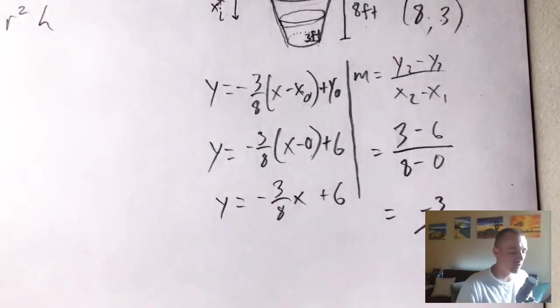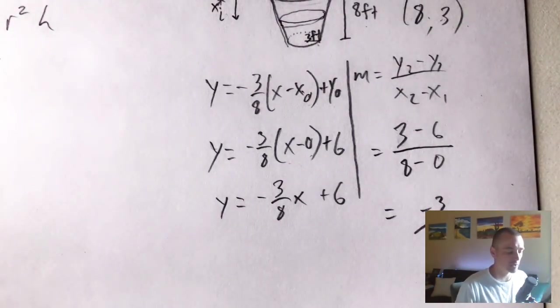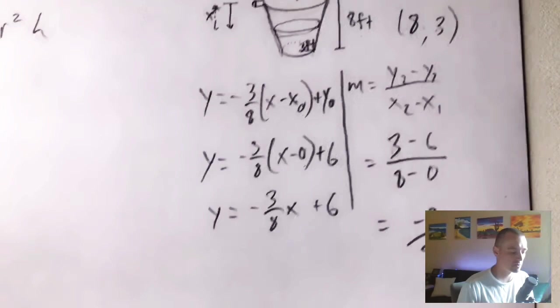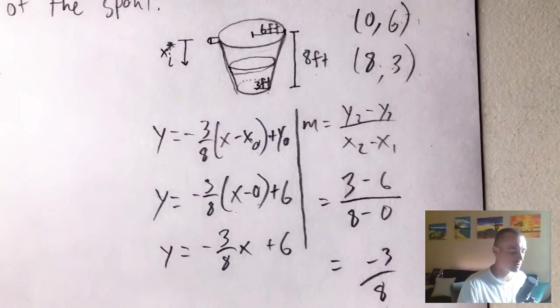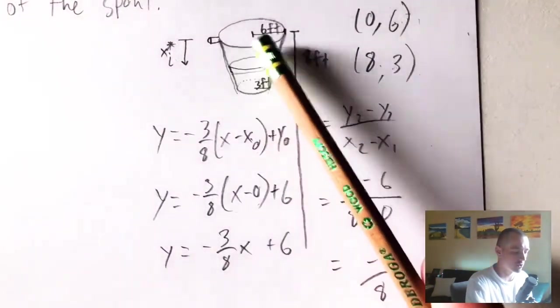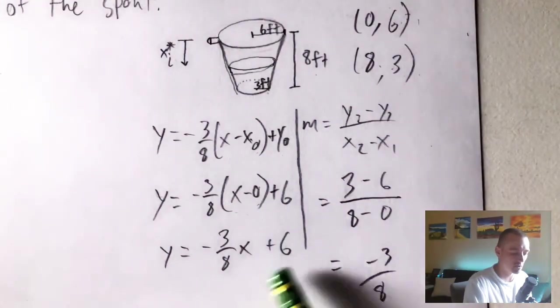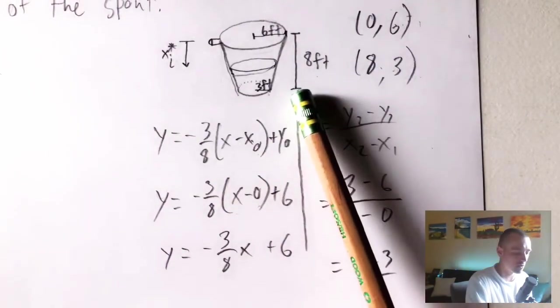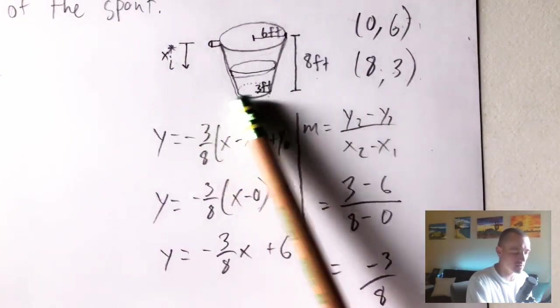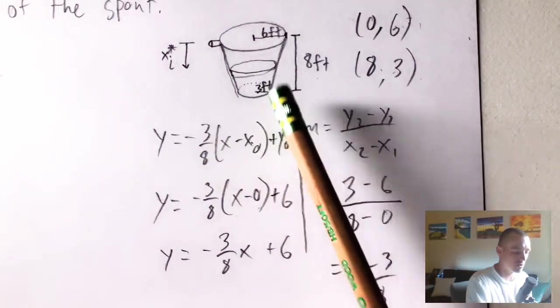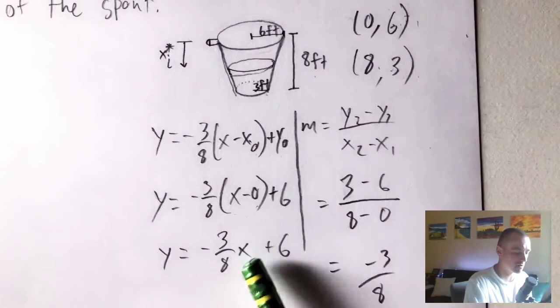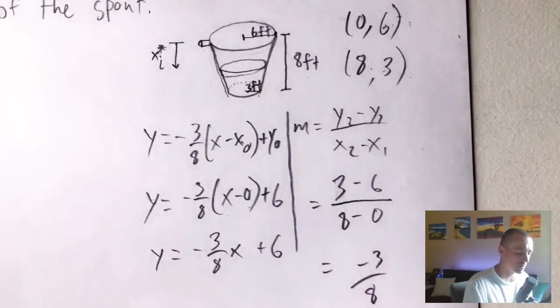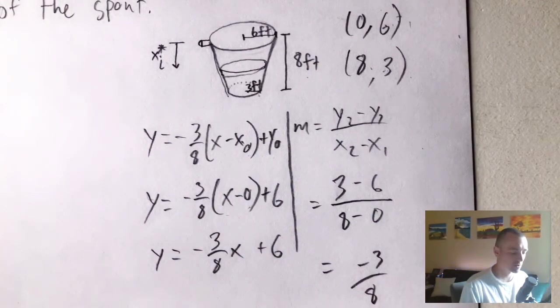We could confirm that this is accurate by plugging in different x values and make sure it actually makes sense. When x is zero, we should have a radius of six, and we would get that. And then when our xi star is all the way up to eight, so we're eight feet deep in this tank, we should get a radius of three. So plugging in eight here is going to give us negative three plus six, which is three. So that does seem to check out.